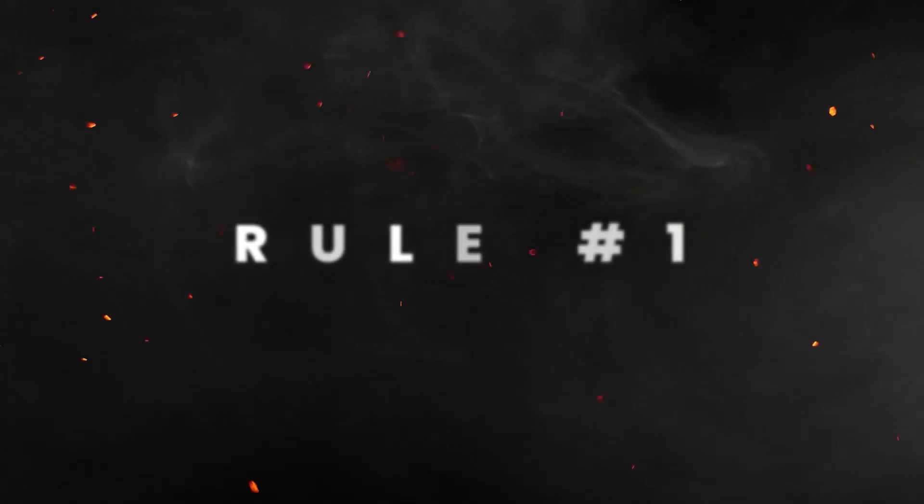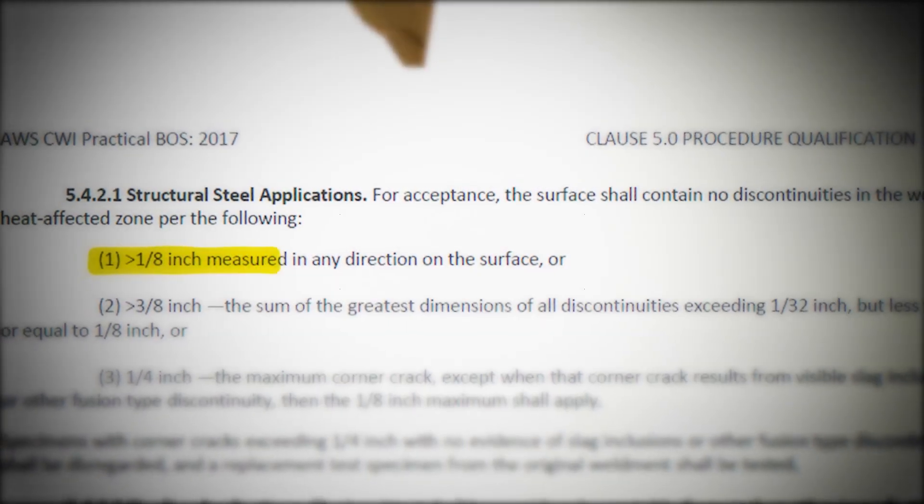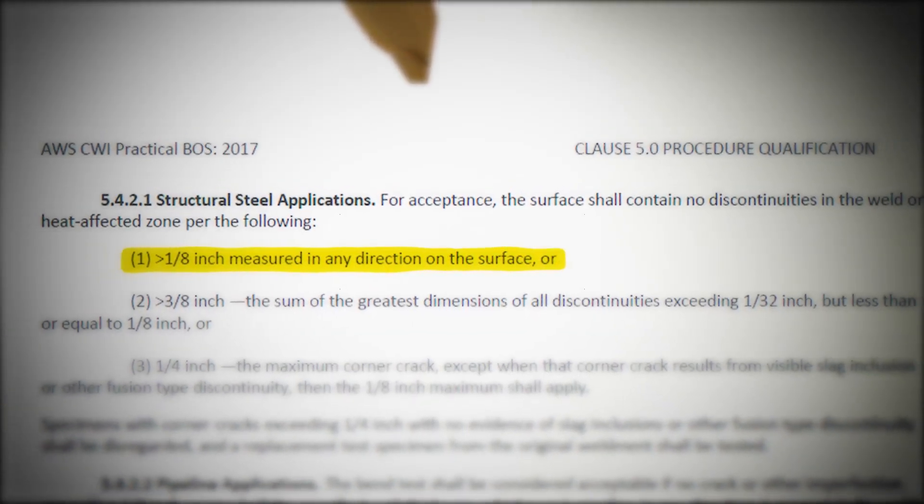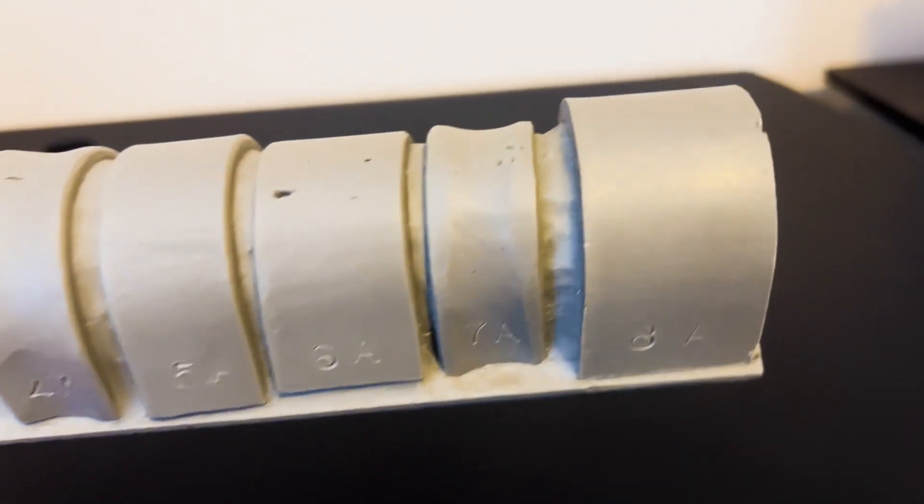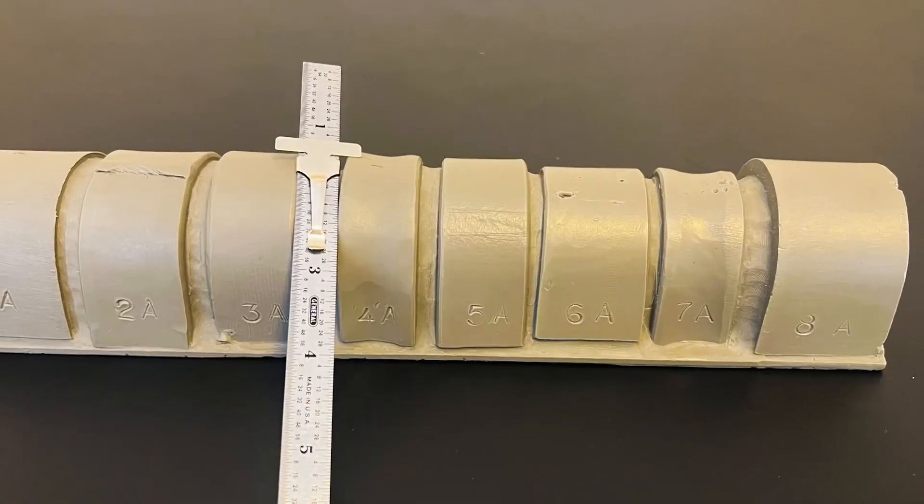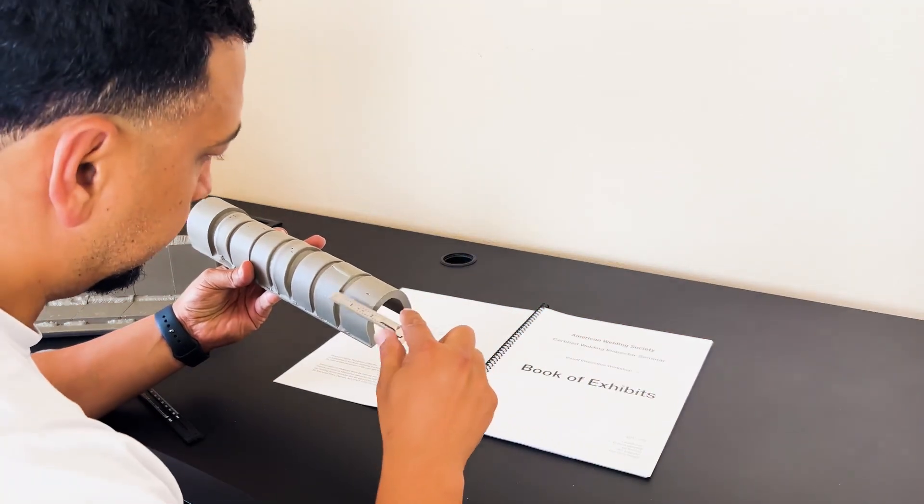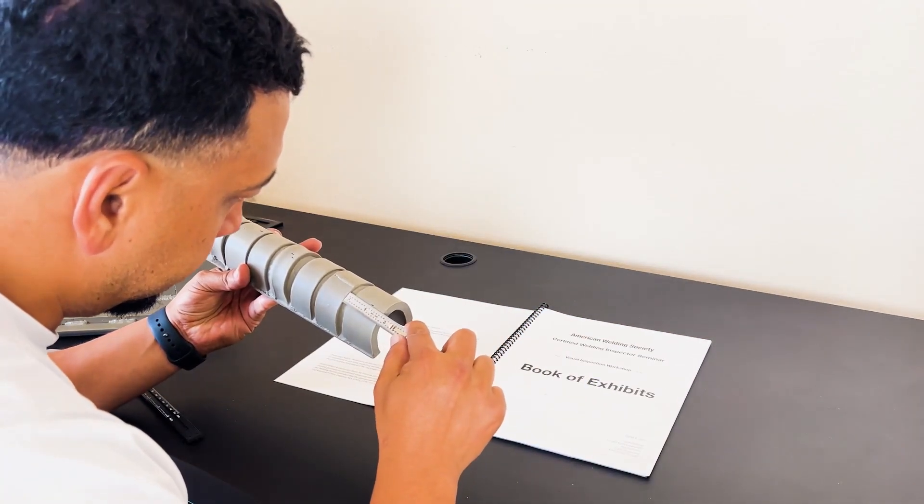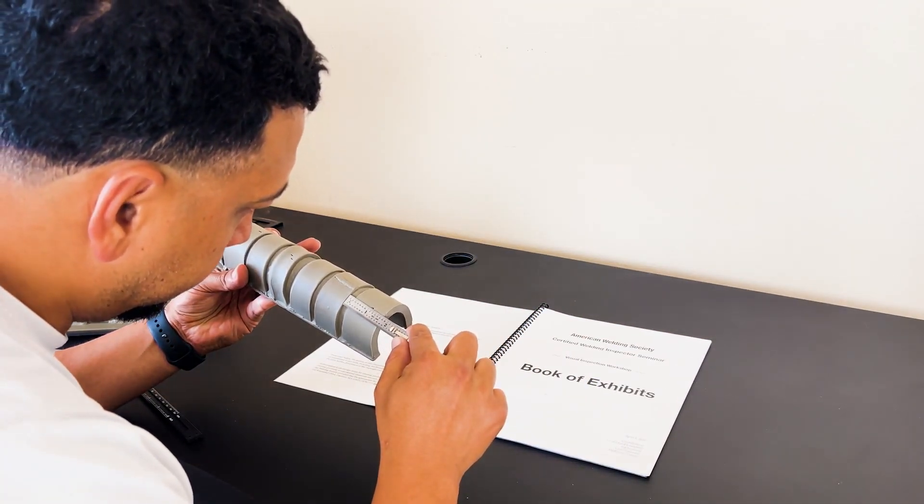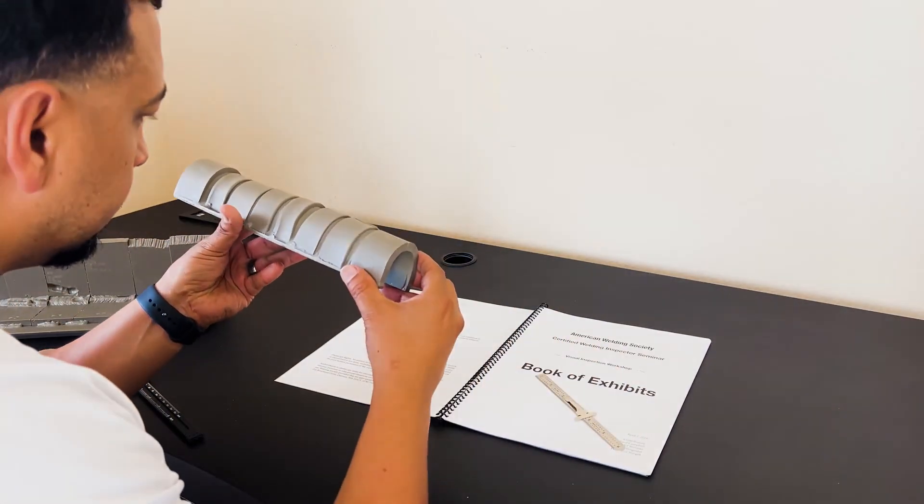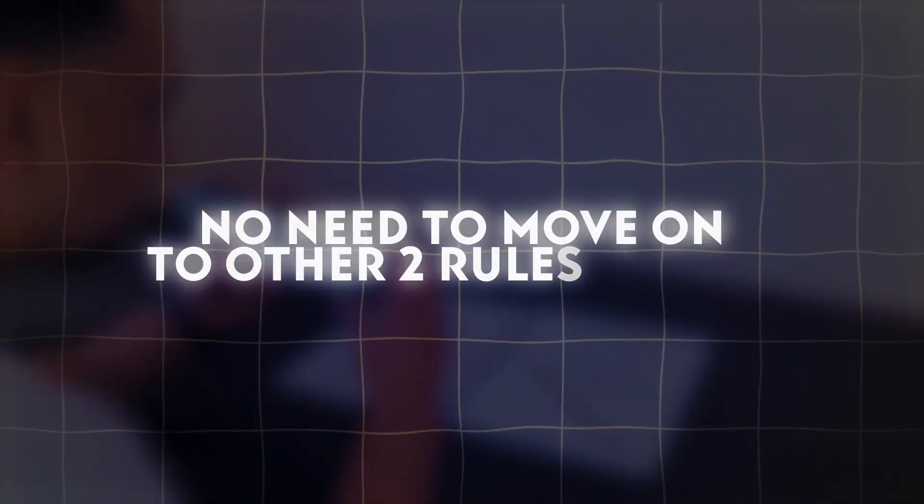For rule number one, a single discontinuity can't be greater than 1/8 of an inch in any direction on the surface. Measure your discontinuity, fracture, tear, whatever it is that you see with your machinist's ruler. If it's less than or equal to 1/8 of an inch, it's acceptable. But if it's greater than 1/8 of an inch, it's rejectable and there's no need to move on to the other two rules below.